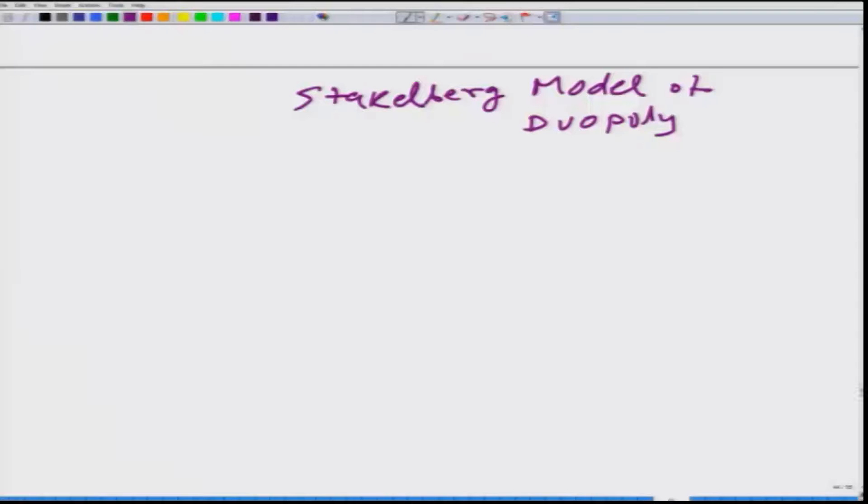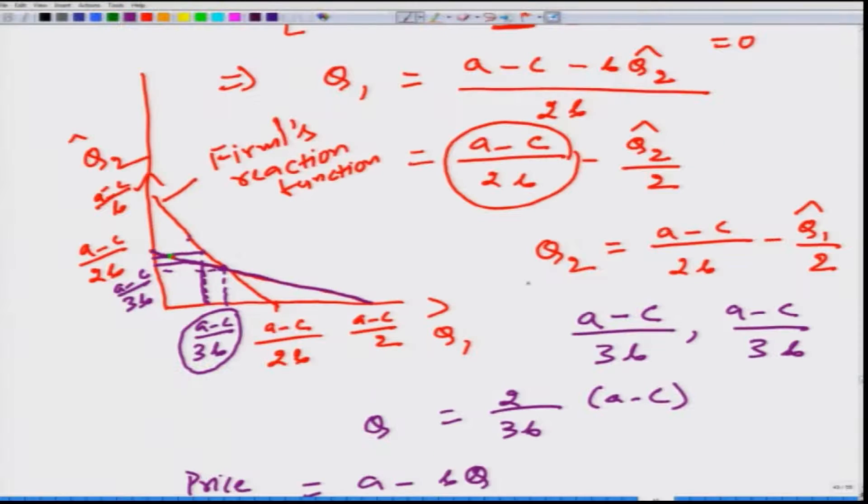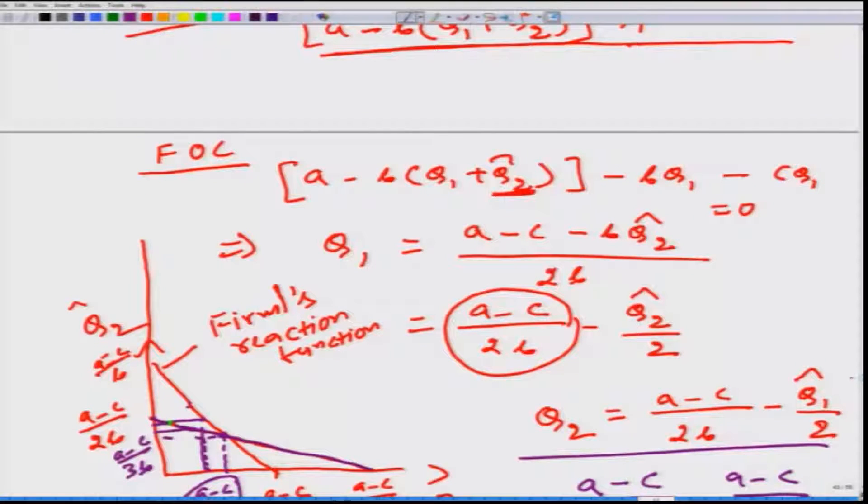So the optimization problem that we did earlier in the Cournot game is exactly the same for firm two. For firm one we will see the change.